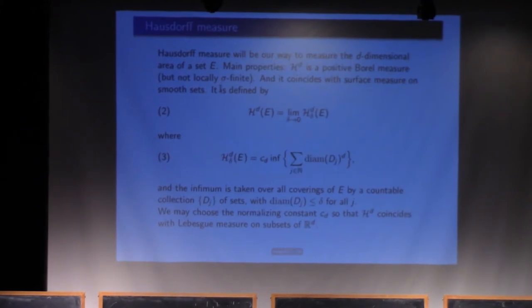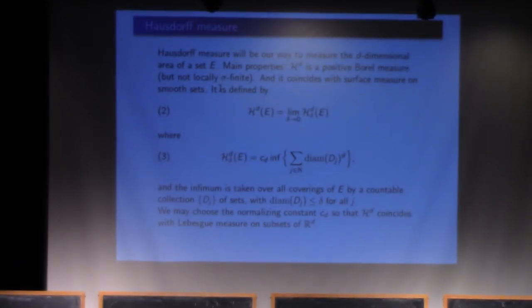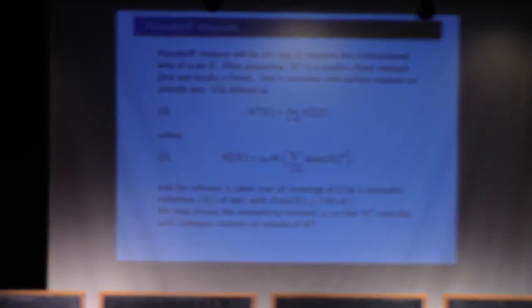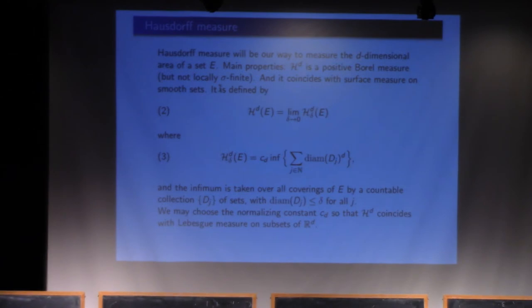I'll be using Hausdorff measure a lot, so here is its definition. You take a set, try to cover it by sets D_j, sum the diameters to the power d, take the best covering, multiply by the right constant so that you get exactly Lebesgue measure on sets of dimension d. This expression is a decreasing function of delta, so it has a limit — that's the Hausdorff measure. It is a measure defined on any Borel set, and when the Borel set is a smooth surface of dimension d, it coincides with surface measure.